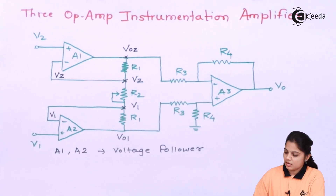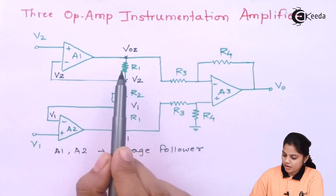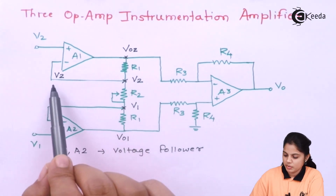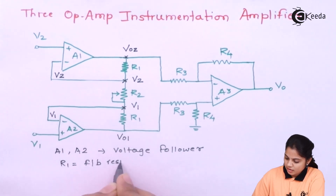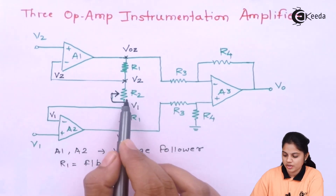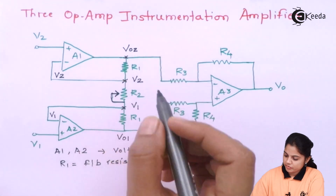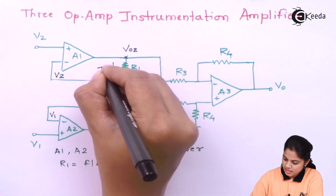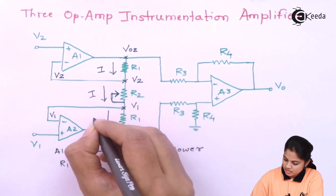Now let's derive the output voltage for the 3 op-amp instrumentation amplifier. R1 values are the same and are connected at the output and input terminals — R1 is the feedback resistor. R2 is a potentiometer, shown with an arrow, meaning you can vary R2 to adjust the gain and voltage. The current flowing through all three resistors in this branch is the same current I.